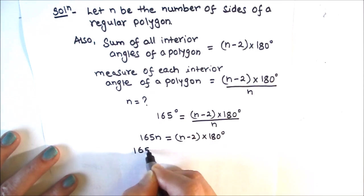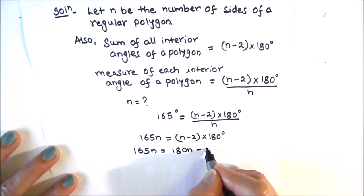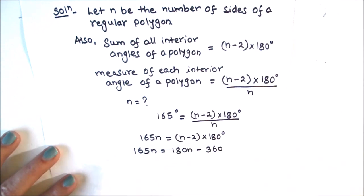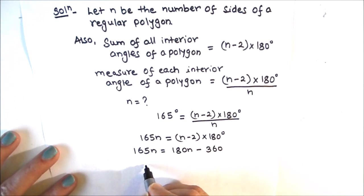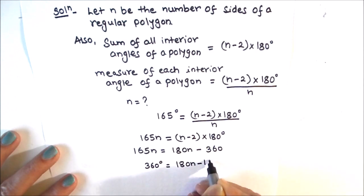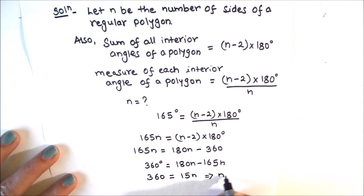Expanding: 165n = 180n − 360. Transposing 165n to the right and 360 to the left gives 360 = 180n − 165n, which simplifies to 360 = 15n.